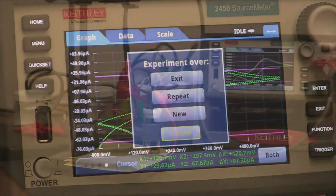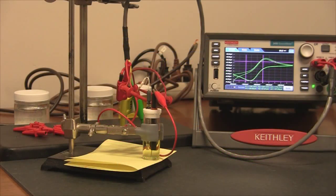And there you have it. So here you have it. This is how easy it is to make a cyclic voltammogram with the 2450-EC.